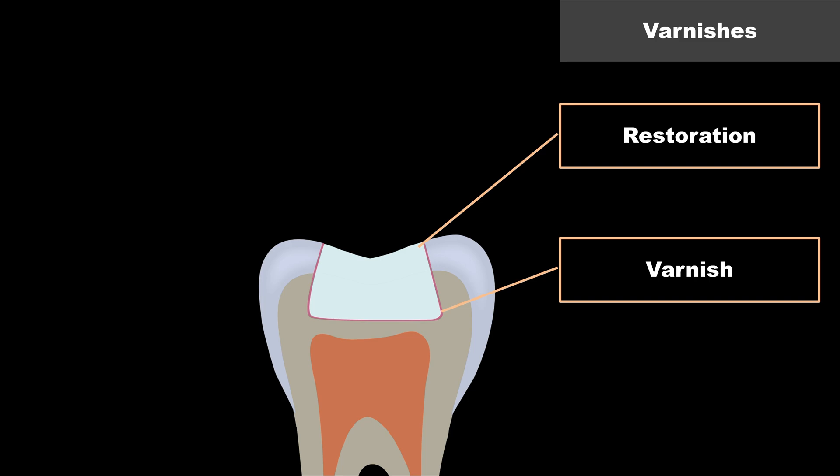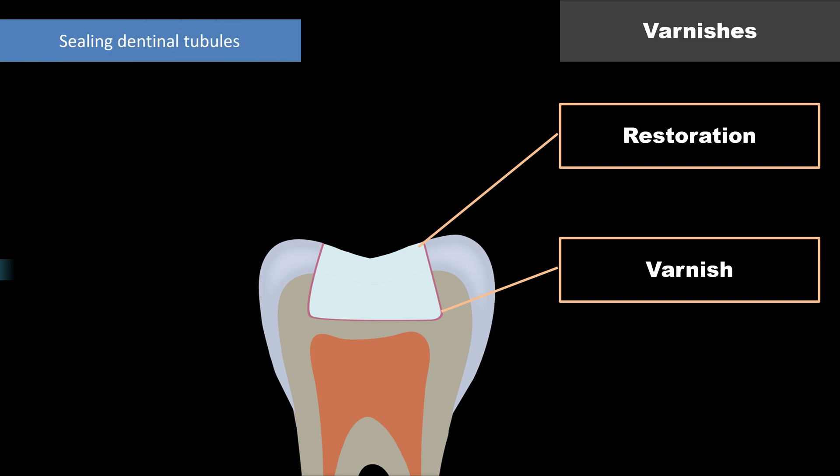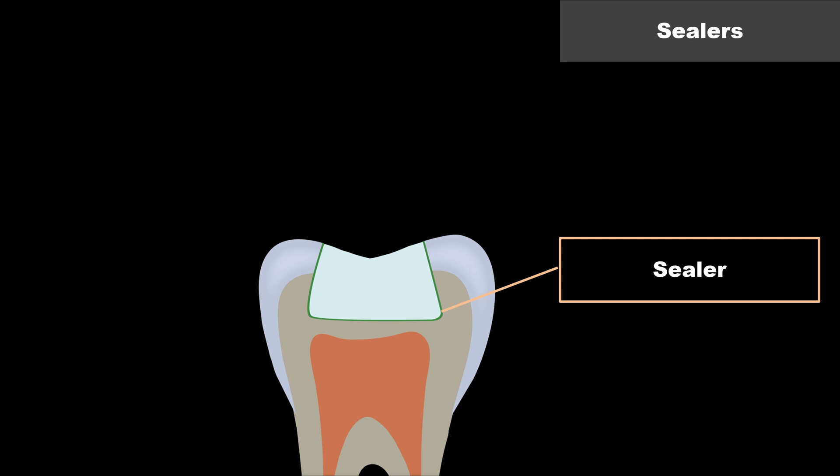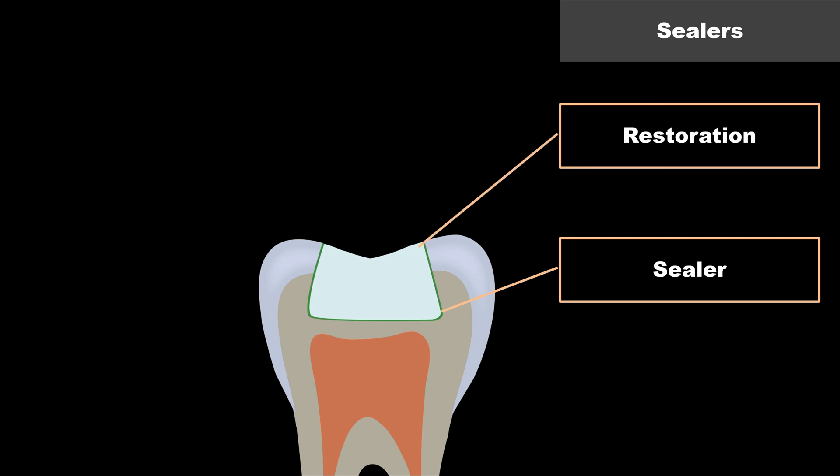Varnishes are applied on top of the preparation before the restoration. They seal the dentinal tubules. The most common example is copal resin varnish. Varnishes are often indicated under amalgam restorations. They should never be applied under glass ionomer cement restorations, which bond chemically to the tooth, nor under composite restorations, which bond by micromechanical bonding. Varnishes can prevent discoloration of the tooth caused by dental amalgam and provide a good initial marginal seal for amalgam restorations.